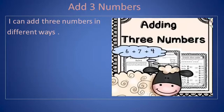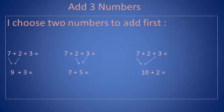Now we will learn how to add 3 numbers together. I can add 3 numbers in different ways. I choose 2 numbers to add first. Here we have 7 plus 2 plus 3. Look at the first way — we can add 7 plus 2. They are equal. 7 plus 2 equals 9.